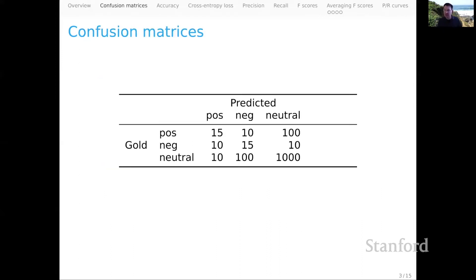Let's begin our discussion of classifier metrics by talking about confusion matrices, a pretty fundamental data structure for a lot of the calculations we'll perform. By convention, I'll have the actual labels going across the rows, and across the columns I'll have the predictions from some classifier model. You can see in this confusion matrix that there were 15 cases in which the model predicted positive and the actual label was positive, whereas there are 10 cases where the actual label was positive and the model predicted negative.